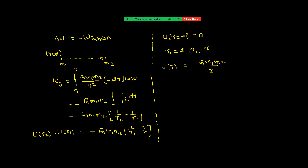Suppose if we have three particles — M1, M2, and M3 — then we have to consider three pairs: M1-M2 one pair, M2-M3 one pair, M3-M1 one more pair, and apply this result. If you are having N particles, then we have to consider N_C2 pairs, that is N times (N minus 1) divided by 2 pairs. For example, if N equals 4, then 4_C2 equals 4×3/2 equals 6 pairs.